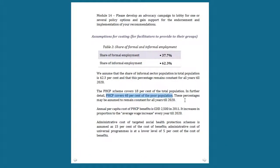The benefit level is taken from the assumptions in the case study. In 2011, the actual per capita cost of PHCP benefits was 2,500 dynes. This is assumed to increase every year with average wage increase, because the largest component of health care costs is made up of wages for doctors, medical staff, and manpower costs.